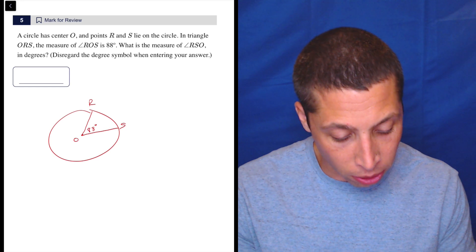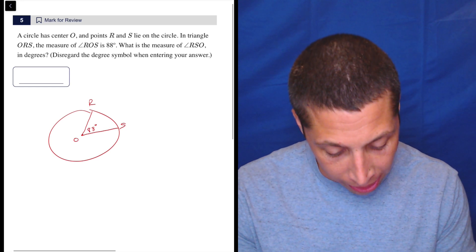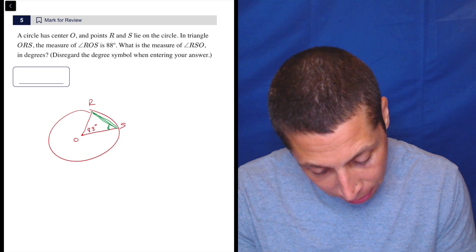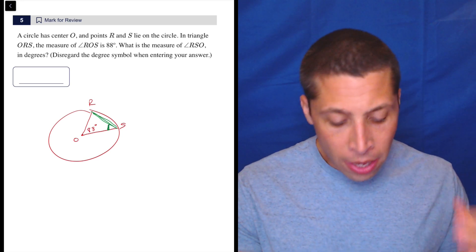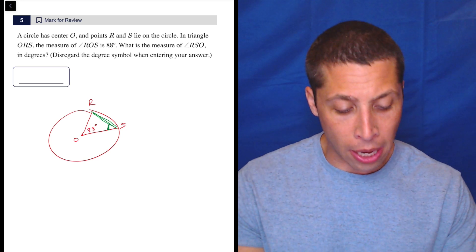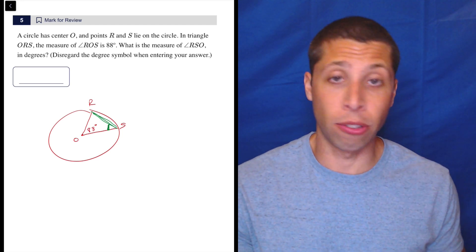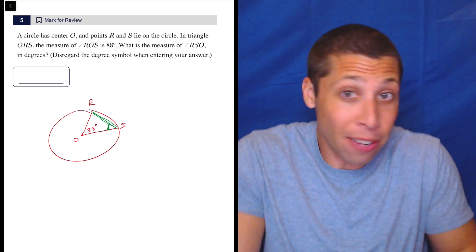What is the measure of angle RSO? So RSO means I got to draw an extra line in here, and that's going to be this angle right here. Now, this question really gets to some of the most important ideas that we need for just any sort of hard geometry question, but it kind of did it for us.